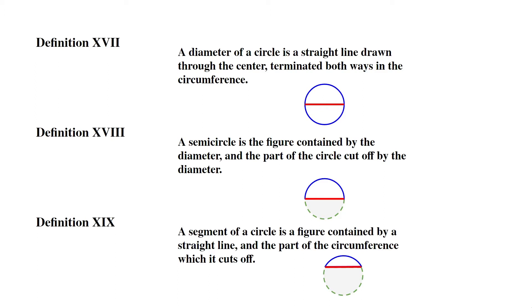Definition XVIII says a semicircle is the figure contained by the diameter and the part of the circle cut off by the diameter. So semi means half, so a semicircle would be a half circle. A half circle would be the figure contained by the diameter. The way you can look at it is if you cut off this half of the circle, you're left with the other half, and the other half is a semicircle.